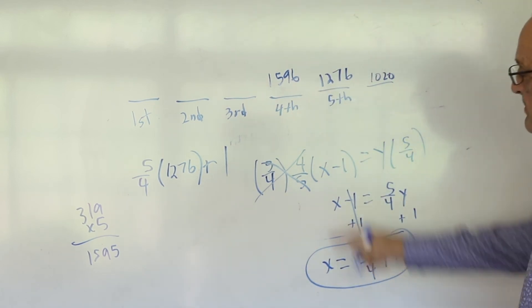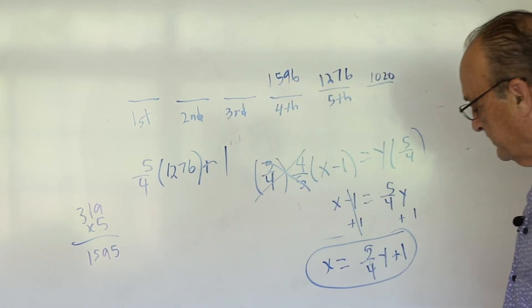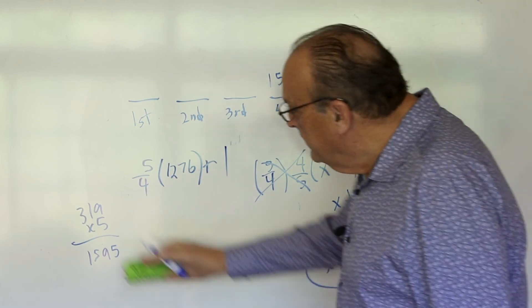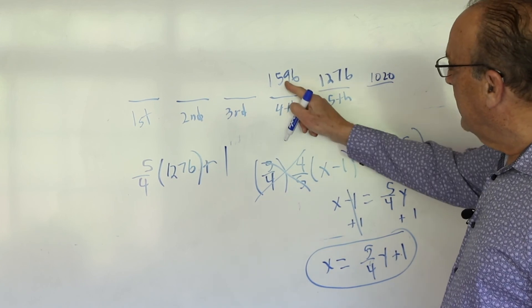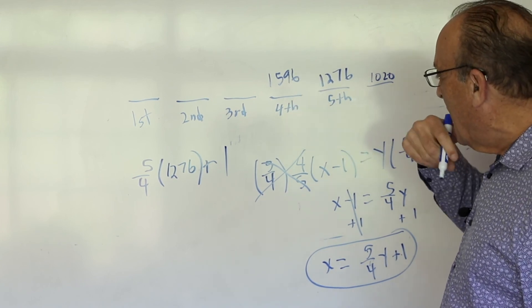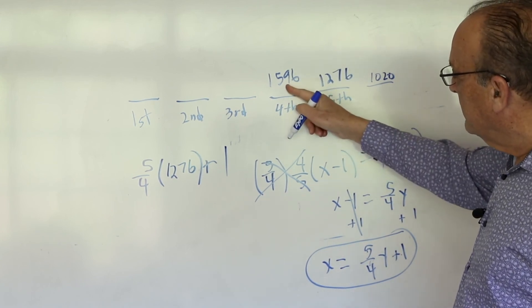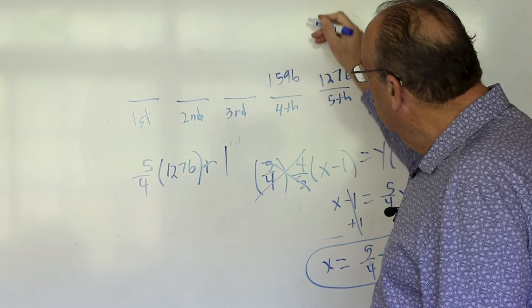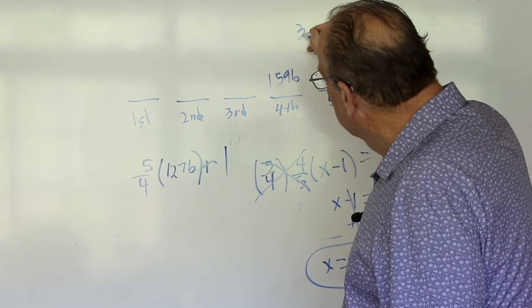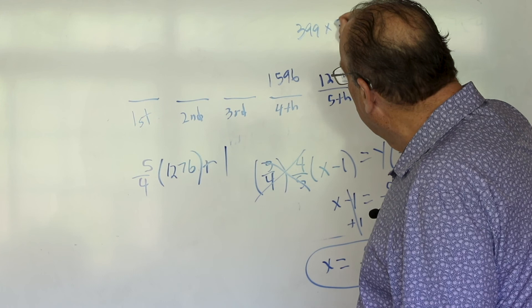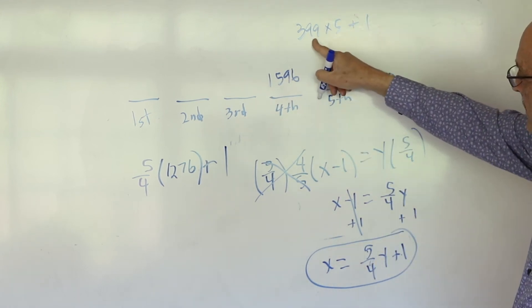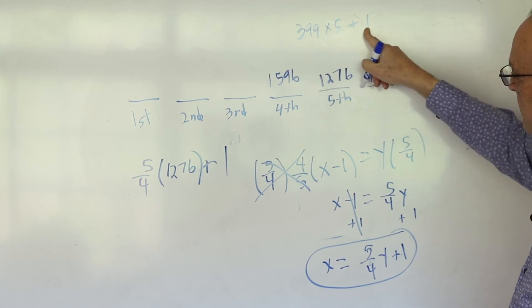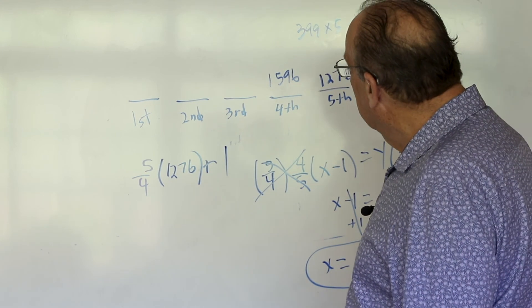So then we times this by 5 fourths and add 1. So if we divide that by 4, we almost get 400. Instead we get 399. So we get 399 times 5 and then add 1. It's almost 2000. But it's 1995 plus 1. So it's 1996.